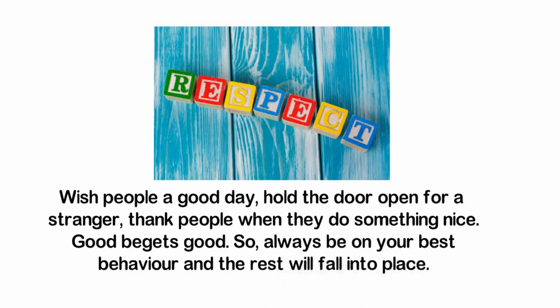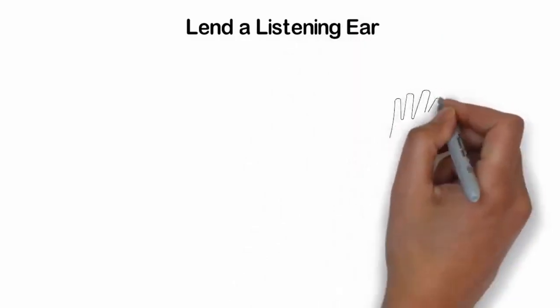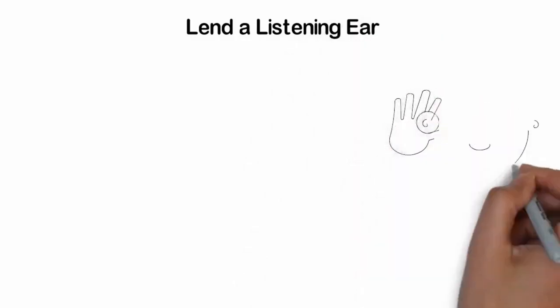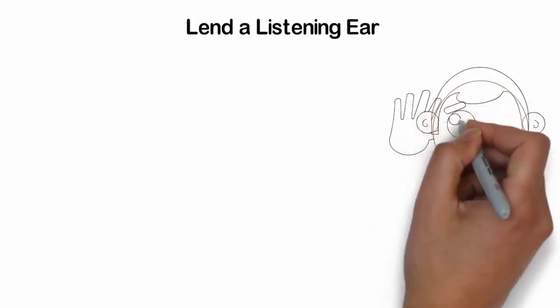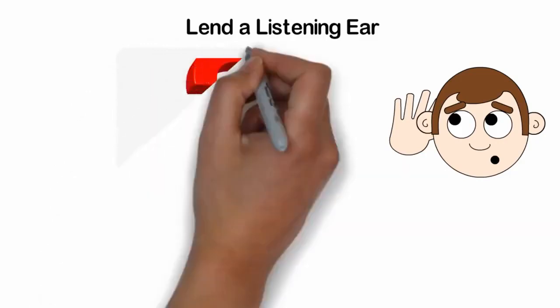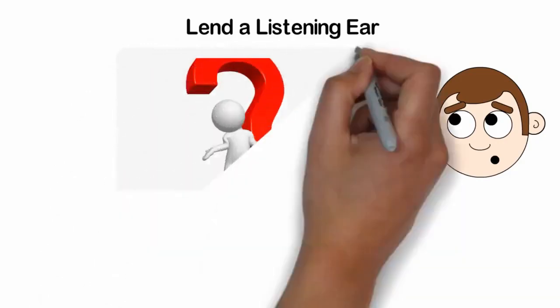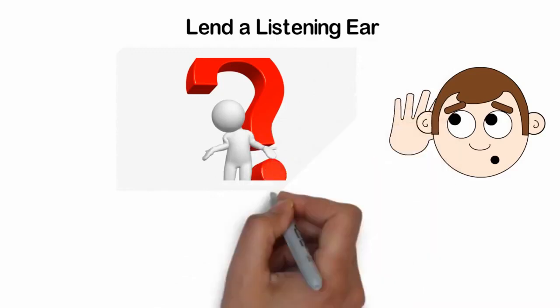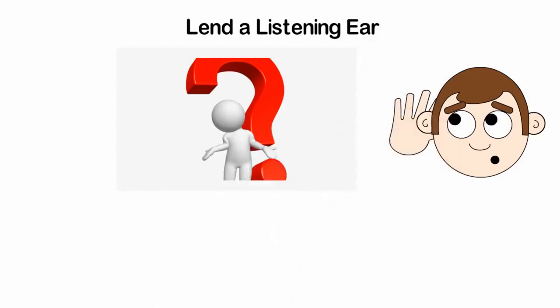Lend a listening ear. One of the easiest things to do around other people to win you instant bonus points is to listen, plain and simple. People enjoy talking about themselves. It's what they know the most about. So ask them questions about what they do and what they like, and all you have to do is listen. Listening to what a person has to say is a great way to make people feel like what they're saying matters. It makes them feel important and special.